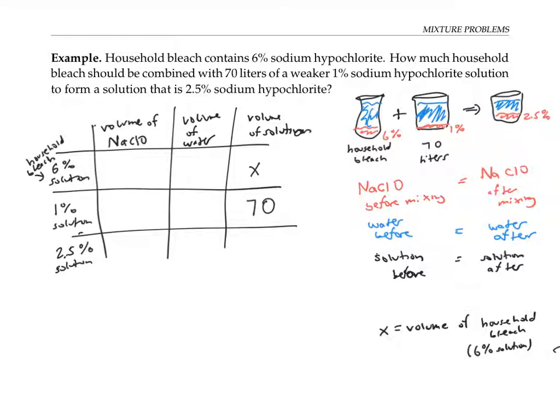Now, since my 2.5% solution is made by combining my other two solutions, I know its volume is going to be the sum of these two volumes. So I'll write 70 plus x in this box.